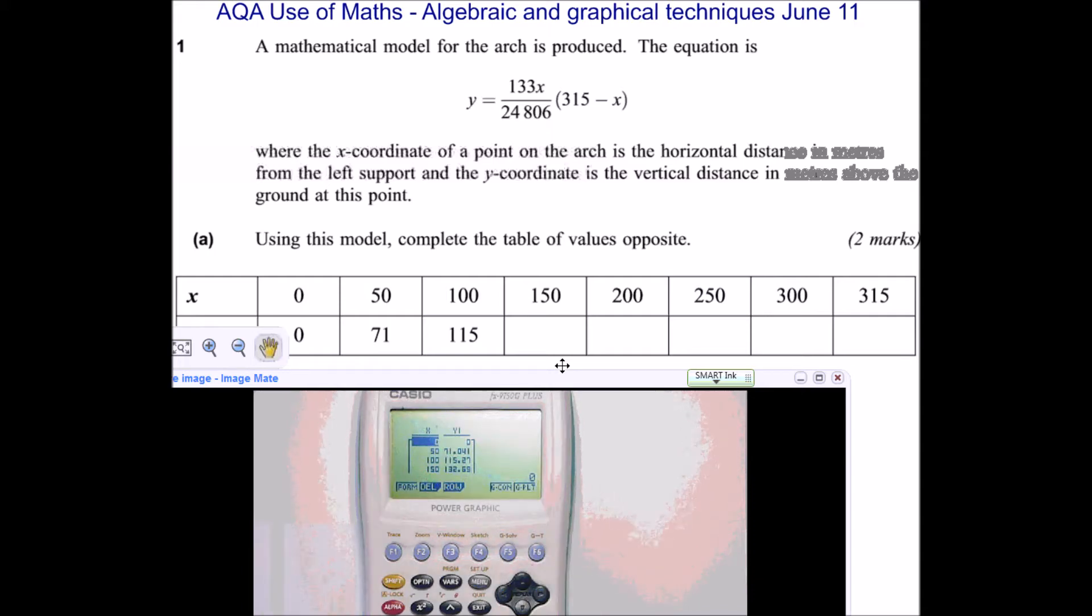What's useful is to just check because we're given the first couple. So I've got zero, I've got zero. I've got 71.041. So the first couple of values match. So we know that we're looking along the right lines. So let's put in the rest of them. So we get 132.69. Well, because we're giving our answers to three significant figures and all the rest of the answers have been given as whole numbers, I'm going to do the same. So I'm going to leave it as 133.